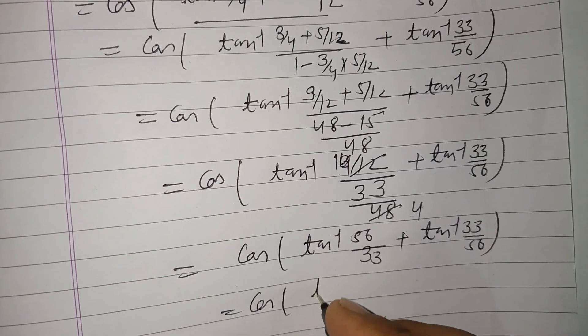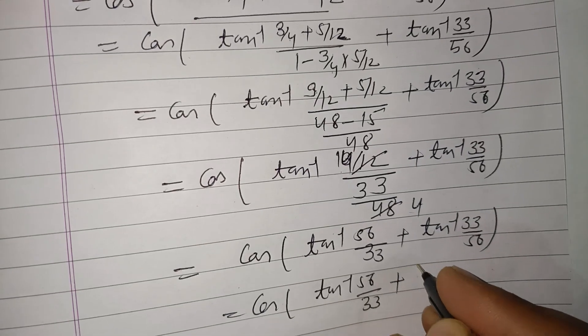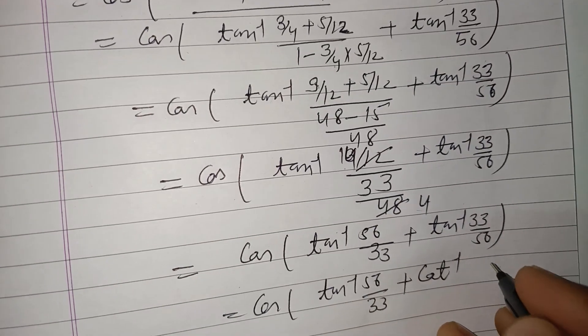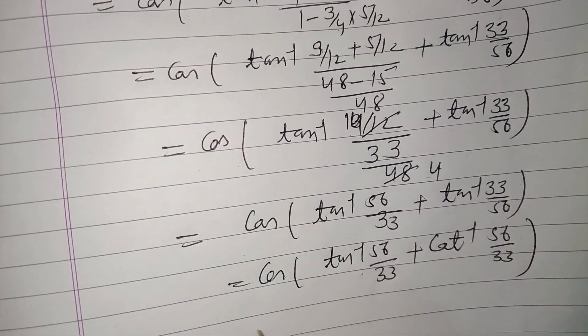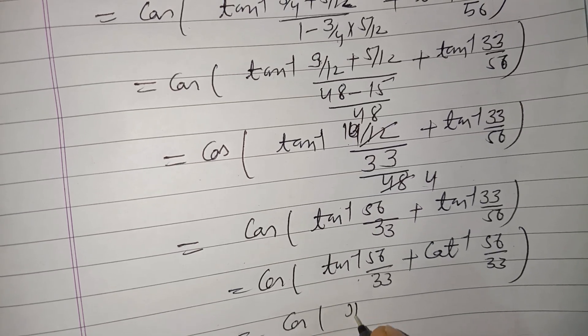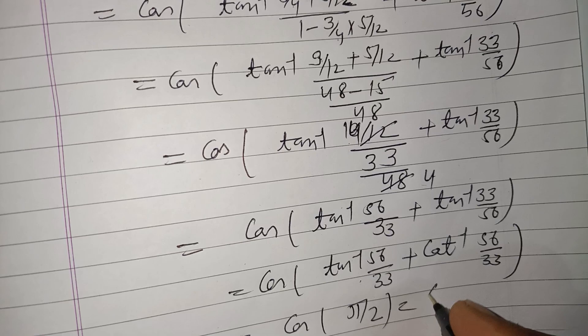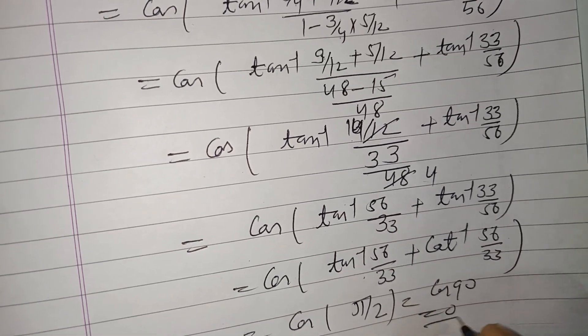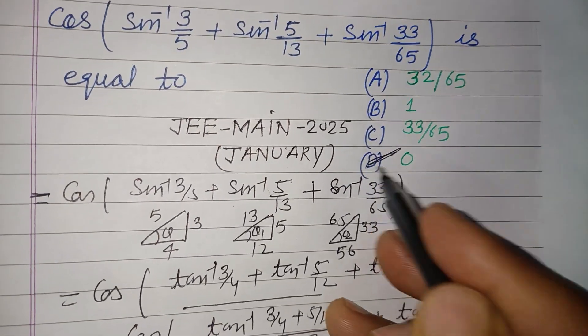We write this as tan⁻¹(56/33), and tan⁻¹ can be changed into cot⁻¹, so 56 upon 33. So tan⁻¹(θ) + cot⁻¹(θ), you know that it is π/2. So cos(π/2) which is 90, so cos(90) is 0.